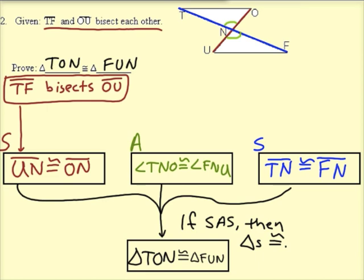The opposite is true for the blue segments, TN and FN. In that case, OU is doing the bisecting and TF is being bisected.